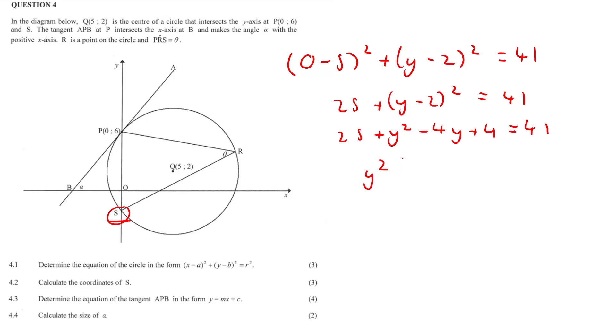So y squared on its own, just make it look nice in descending powers, minus 4y. Now all of this, so 25 plus 4 is 29, 29 minus 41, when we bring that 41 over, that's going to be equal to minus 12. Okay, what are the factors of the child that give us a negative 4? Well, that's going to be a minus 6 and a plus 2. Therefore, in our first bracket, y minus 6, y plus 2 is equal to 0. Therefore, y is equal to positive 6, or y is equal to a negative 2.